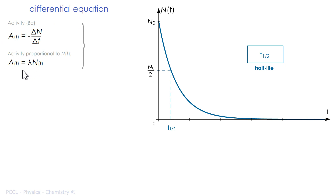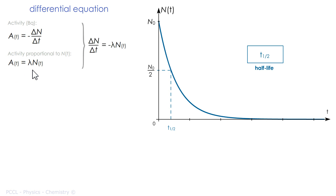Indeed, if there are twice as many nucleides, the activity will be twice as great. Lambda is the decay constant — it is also the constant of proportionality in this equation. This leads us to write ΔN/Δt = −λN.